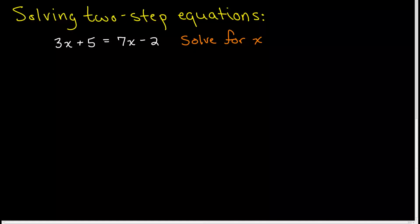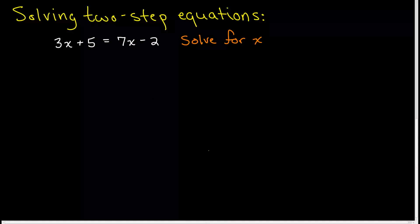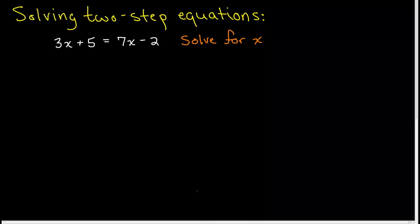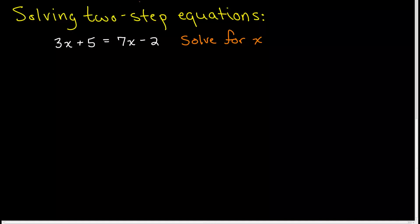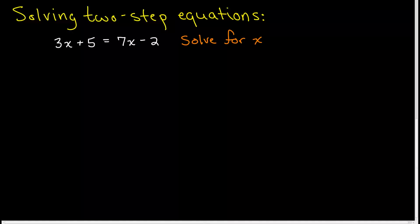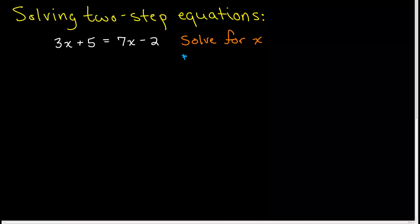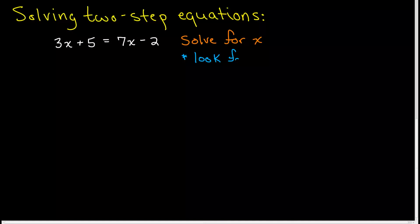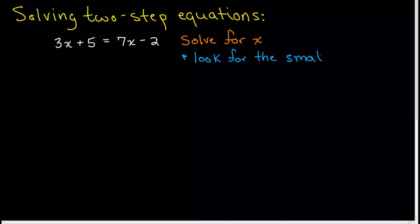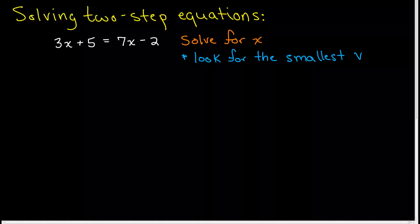The way this video is going to work, we're going to do our math on the left side, we're going to make our notes on the right side, and I think it will help you visualize this process a little better. Your first step should always be to look for the smallest variable term, and then we're going to look at the sign, and that's going to tell us what to do.